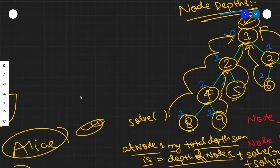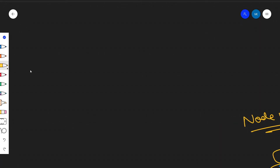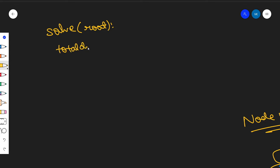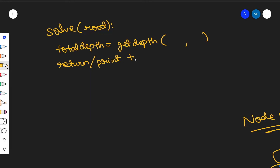Now let's write the pseudo code. The main function 'solve' takes a root. Inside it, we compute 'total_depth = get_depth(root, 0)' and return total_depth. The initial depth is 0 because at the root node, depth is zero. We define a helper function 'get_depth(root, current_depth)'.